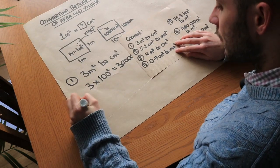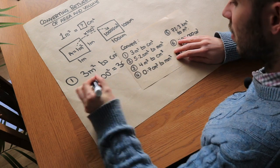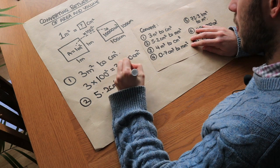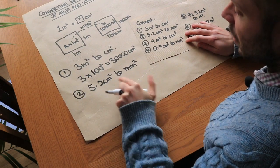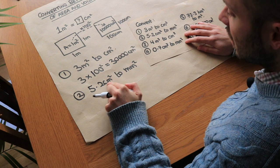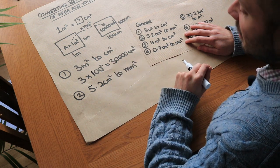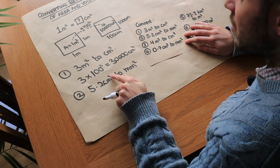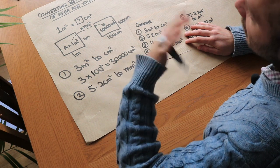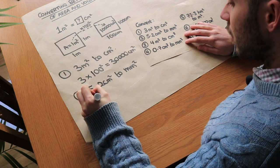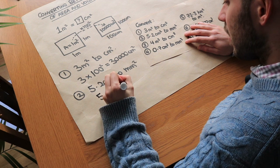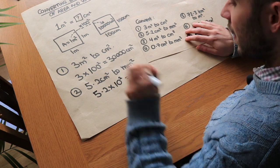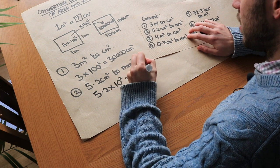For the second question, we've got 5.2 centimetres squared and we want to convert it to millimetres squared. We ask the same question: what would we do to convert from centimetres to millimetres? There are ten millimetres in a centimetre, so we'd multiply by ten. But because it's centimetres squared to millimetres squared, we multiply by ten squared. So we do 5.2 times ten squared, that's 5.2 times a hundred, which is 520 millimetres squared.